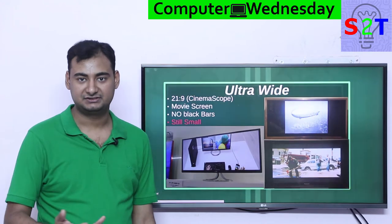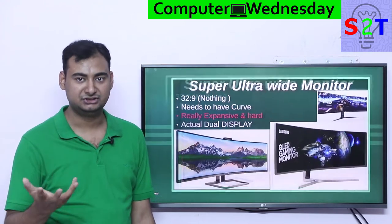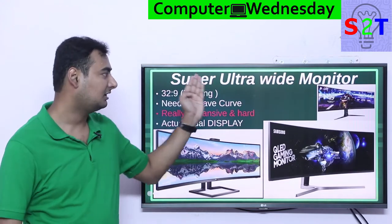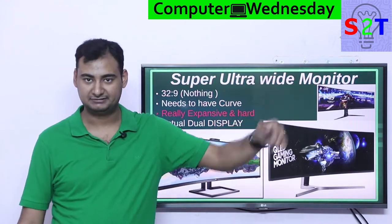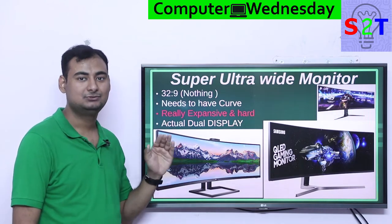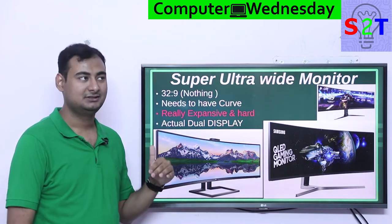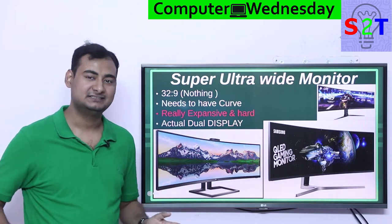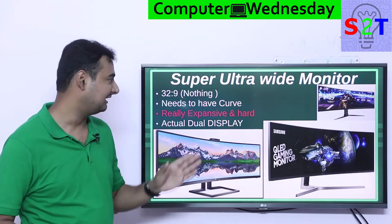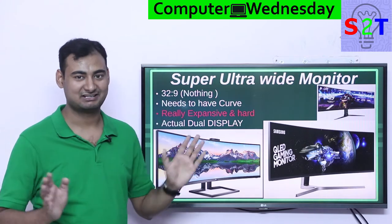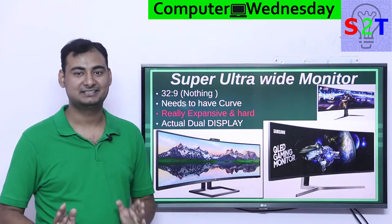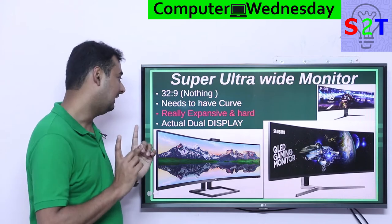So comes the savior — the new kid on the block: the super ultra wide monitor. This runs on a 32:9 ratio. There is nothing that has this ratio — no cinema format, nothing that is shot in this. That is why there is nothing in brackets to reference it against.